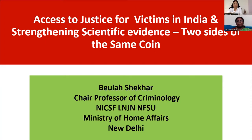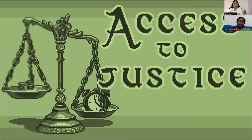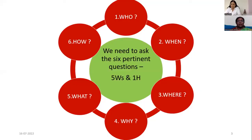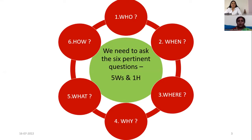I would say that access to justice and scientific justice are two sides of the same coin. Access to justice is the need of the hour and the crucial aim of the criminal justice system. When trying to understand a concept, I call them the five W's and one H: who is responsible to guarantee this access to justice, when do we intervene, where do we begin, why is it needed, what is our role as professionals, and finally, how do we go about doing this?